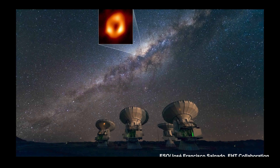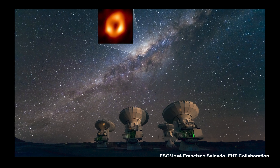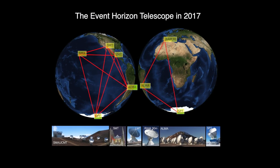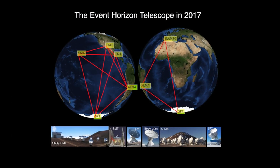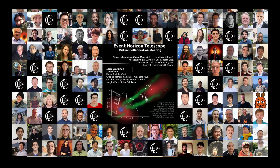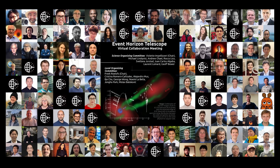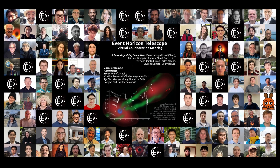The Event Horizon Telescope is a network of radio telescopes spread all around the world and interconnected in such a way that you create a virtual telescope the size of the Earth. It's a very big project — there are over 350 people involved, from more than 60 different institutes in more than 20 different countries, from almost every continent on Earth. So it's a truly international collaboration.